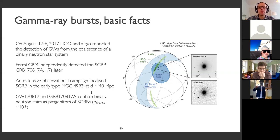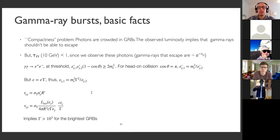Long gamma ray bursts happen when a single star dies, leading to what we call a hypernova — a very powerful supernova. One very interesting thing about gamma ray bursts is that they have Lorentz factors much larger than what we saw in blazers, of order 1000 for the brightest ones. The way we know this is the same argument about attenuation of gamma rays inside the source.